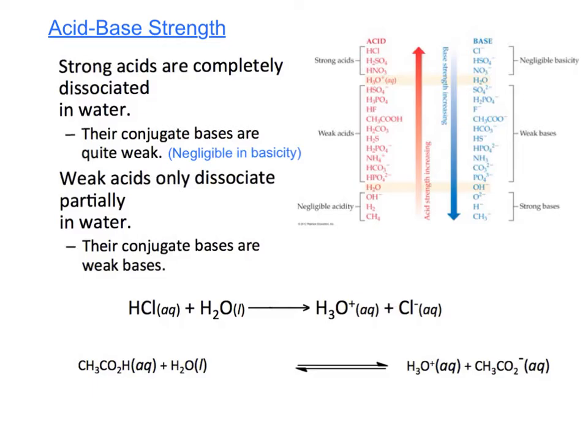Now let's talk about acid and base strength. We talked about strong acids in chapter 4 and strong bases. In your book there's a chart that looks like the one here to the right that gives you increasing acid strength and increasing base strength.